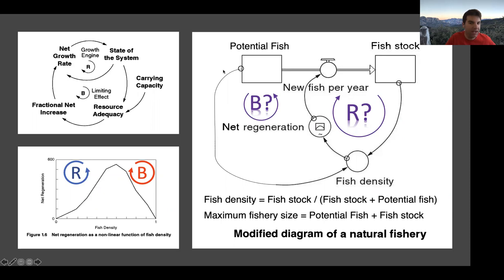The idea is that the total amount of fish I could possibly have is however many fish I currently have plus however many fish I could potentially have in addition. To calculate fish density, I route in the potential fish and the current fish, and then fish density is simply the current number of fish divided by the sum of the current fish plus the number of potential fish. This is an alternate way of modeling carrying capacity where potential fish is like a population gradually being converted from one side to the other.